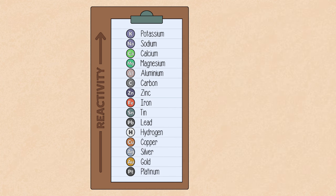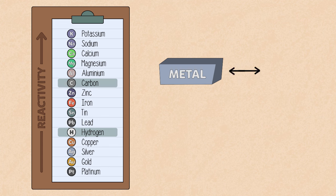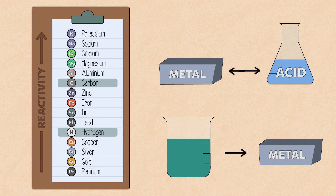If you look closely at the series, you will see that hydrogen and carbon are added for comparison purposes. This is important to help predict whether or not a metal will react with an acid or if it can be extracted from another compound.